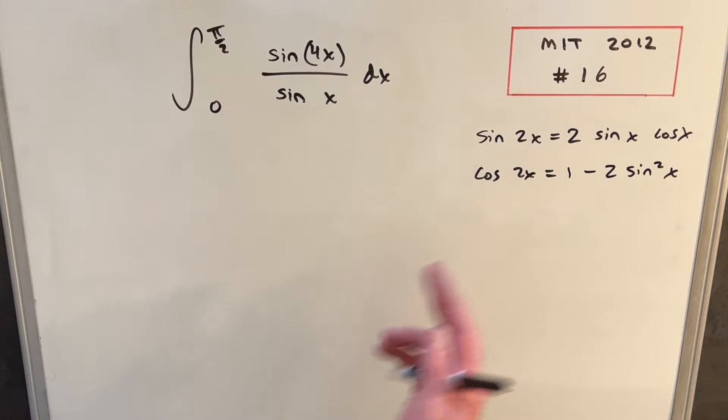So I want to make use of these two formulas that we have over here on the right. For the double angle formula for cosine, there's a few different versions, but I just want to use this version for this particular problem.